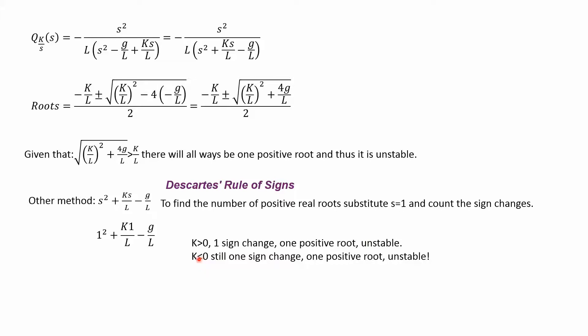What if K < 0? Well, I have 1, then I would have minus, minus. So there's still one sign change and it's going to be unstable. So even though this was promising and simple to look at, it's not going to make that inverted pendulum stable.